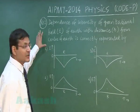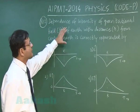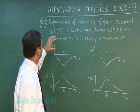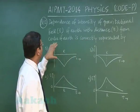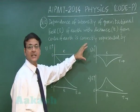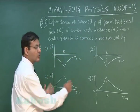Now in this question number 12, as it reads that dependence of intensity of gravitational field capital E of earth with distance r from center of the earth is correctly represented by, and you have been given four graphs.